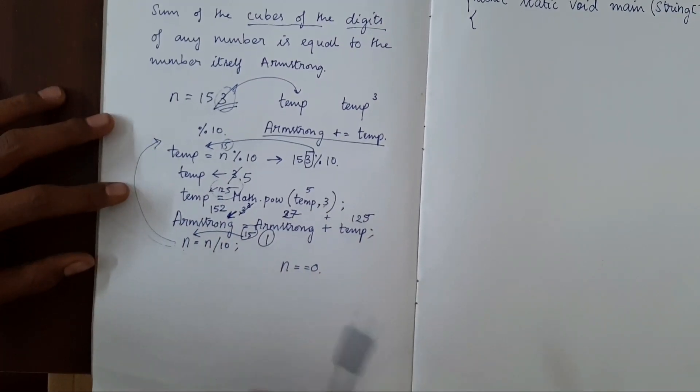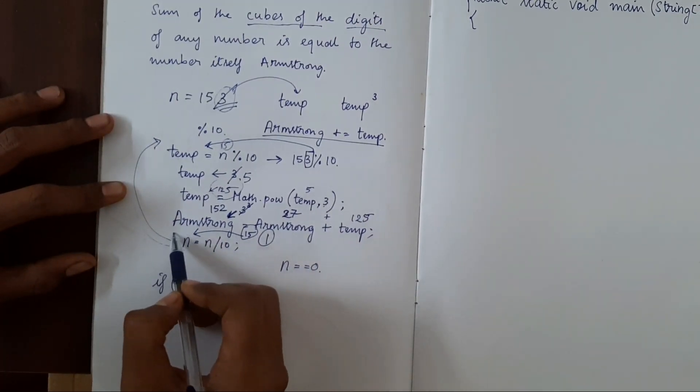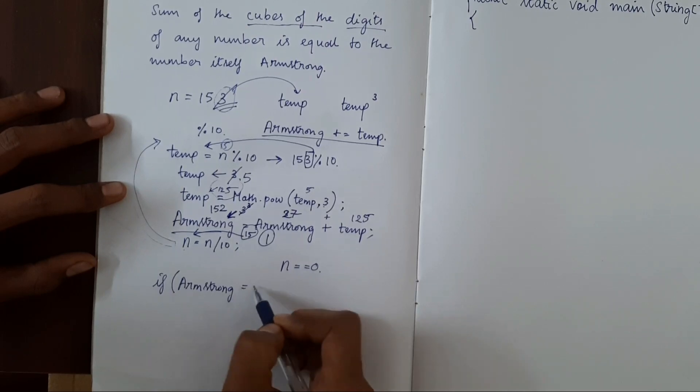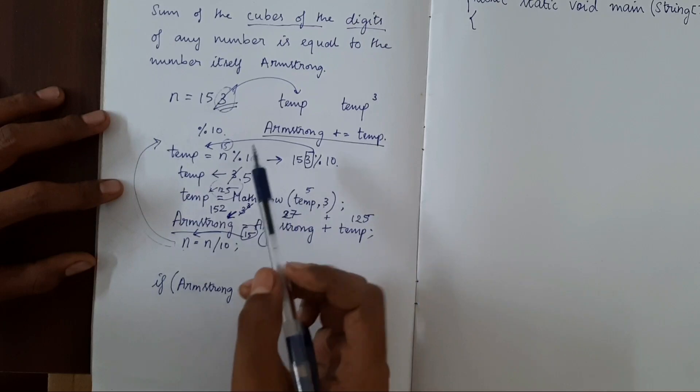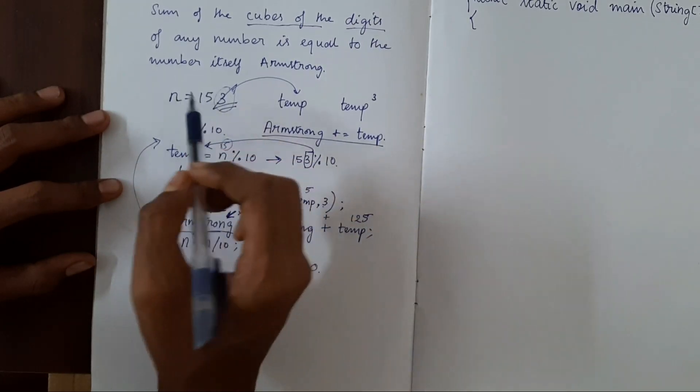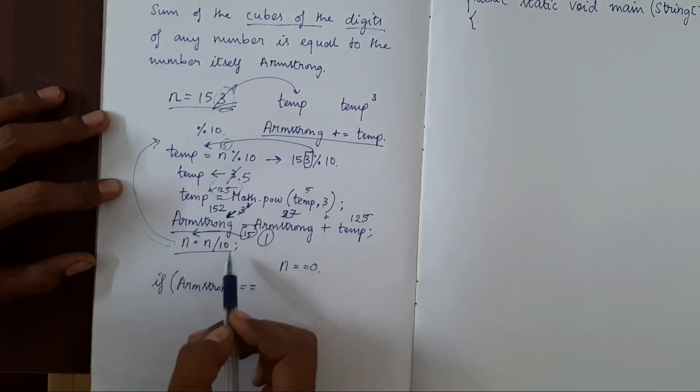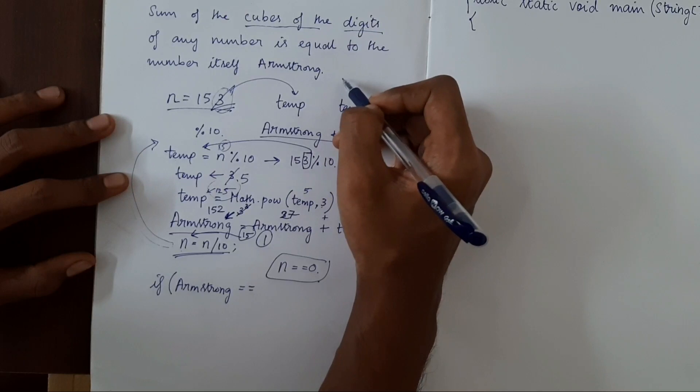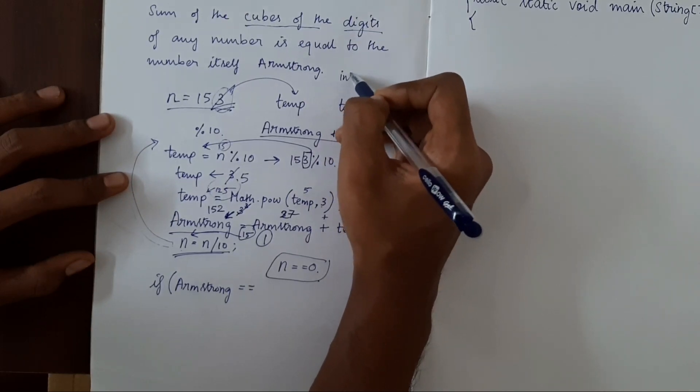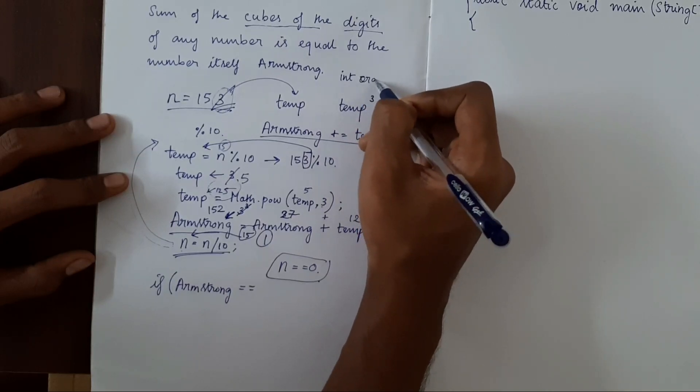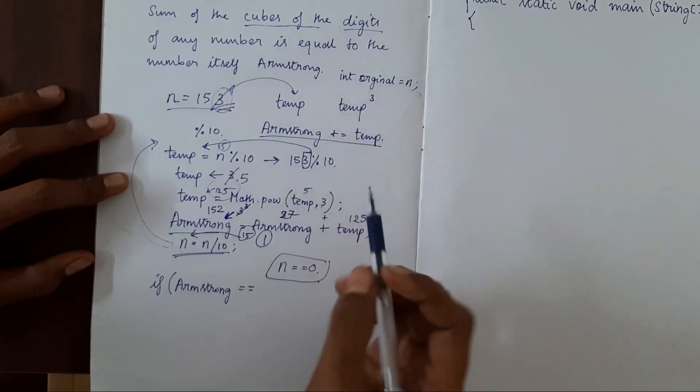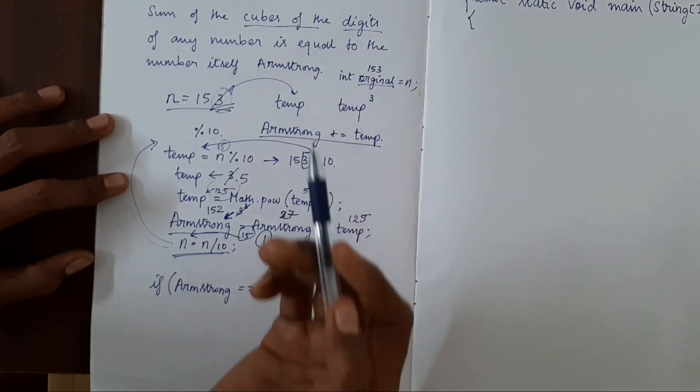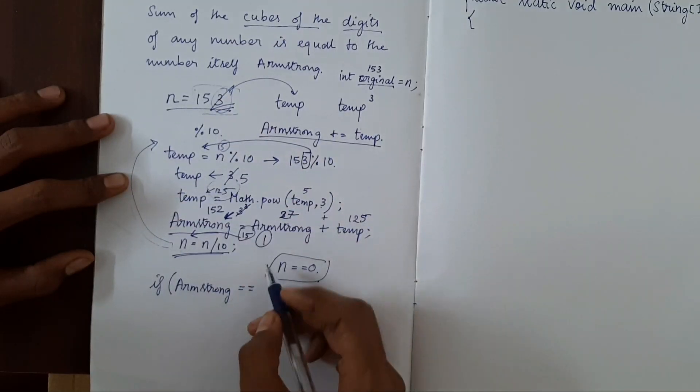For that we'll use if condition. If this Armstrong is equal to the original number. The original number is not here because the original number was n, and we modified n, and now n is 0. So what we'll do? Before doing all these steps, we should have created one more variable. Let's say int original equal to n. This original value will not be modified anywhere here and it will be having 153, which was the input.